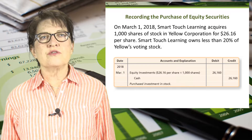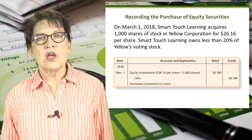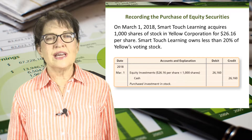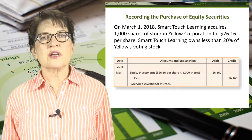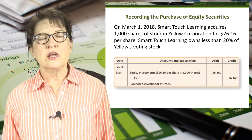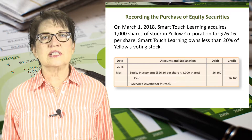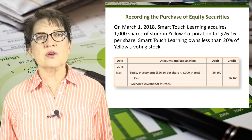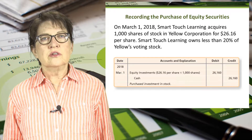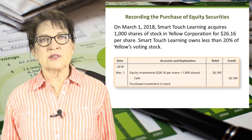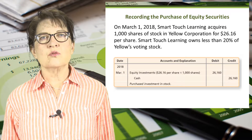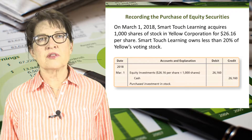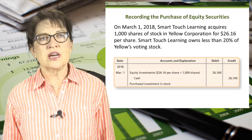Let's look at the journal entries used to record an investment in equity securities where the investor does not have significant influence. On March 1, 2018, Smart Touch Learning acquires 1,000 shares of stock in Yellow Corporation for $26.16 per share. Smart Touch Learning owns less than 20% of Yellow's voting stock. The journal entry would be to debit equity investments for $26,160, which is $26.16 per share times 1,000 shares. The credit is to cash for the same amount.